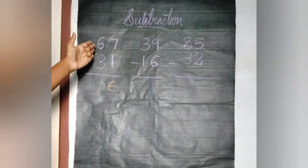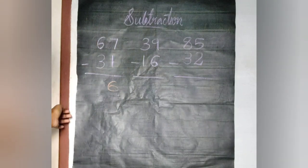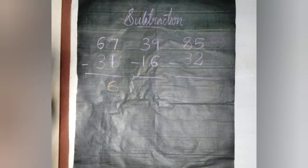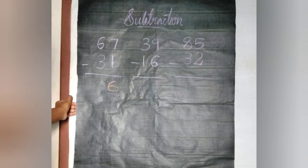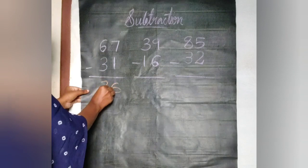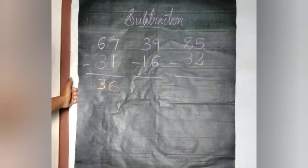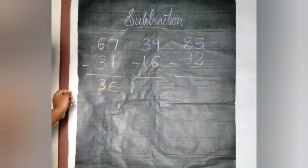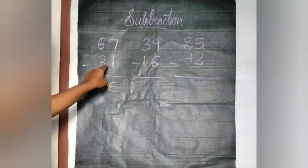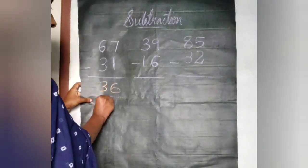And let's move to the position of tens. There we have 6 and 3. So we have to do 6 minus 3, which is equal to 3. So we get the answer 36. 67 minus 31 is equal to 36.